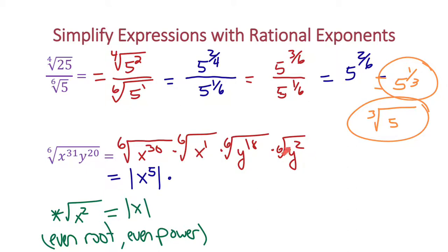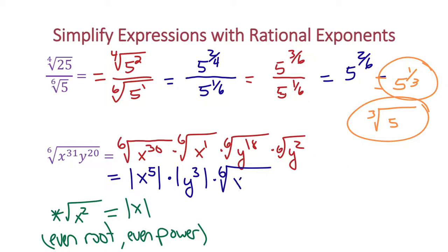We can't simplify the remaining parts yet, so we'll move them to the end. We have another even power and even root, so what comes out must be in absolute value: 18 divided by 6 is 3, giving absolute value of y to the 3rd. We then tag along the two parts we couldn't simplify: the 6th root of x times y squared as my final answer.